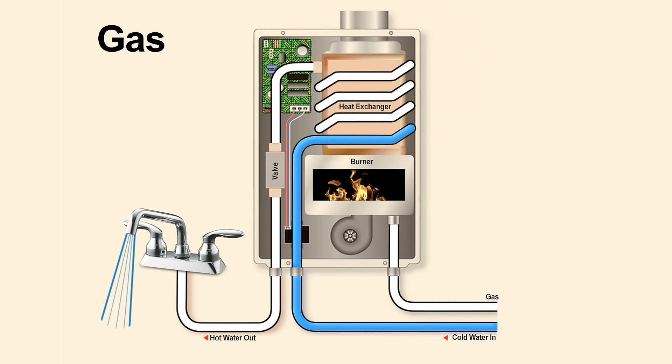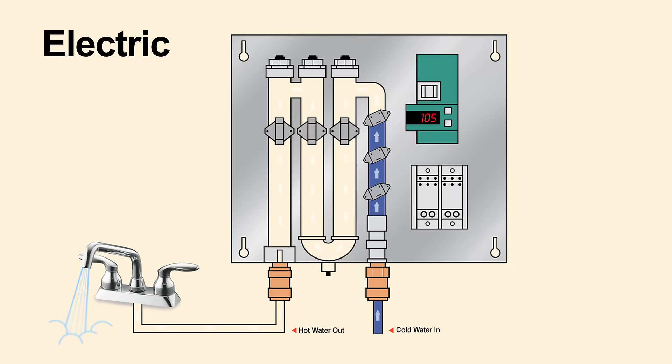In gas heaters, the burner ignites and the water circulates through a heat exchanger coil. In electric units, the water enters and goes through a coil of heating elements.